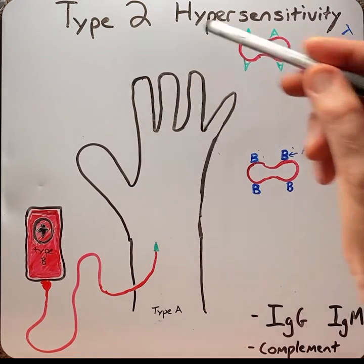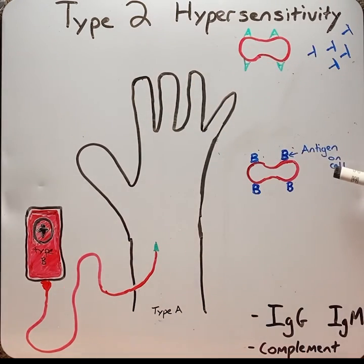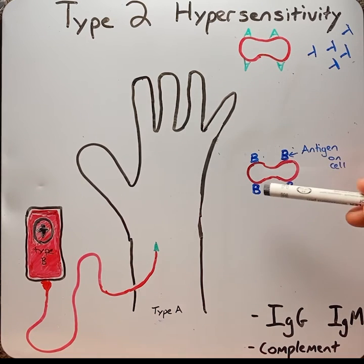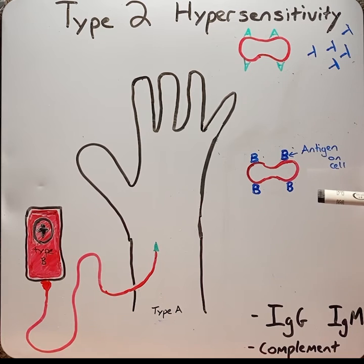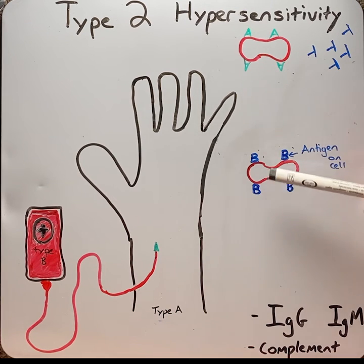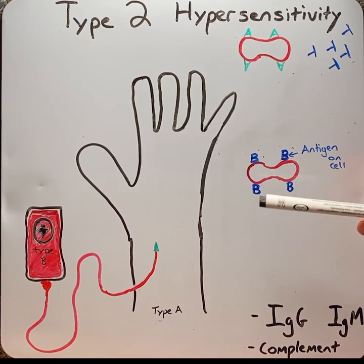In type 2 reactions, the antigens are attached to the cell, which could be either intrinsic or extrinsic. For intrinsic antigens, the antigen is a normal part of the cell or tissue.